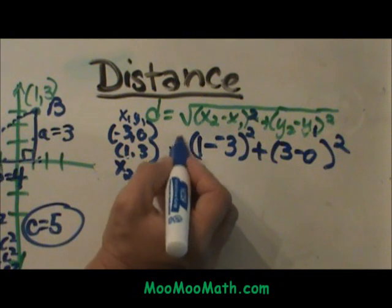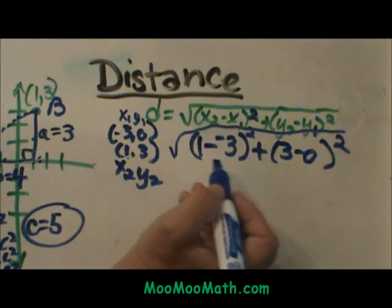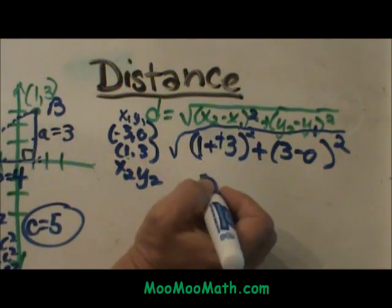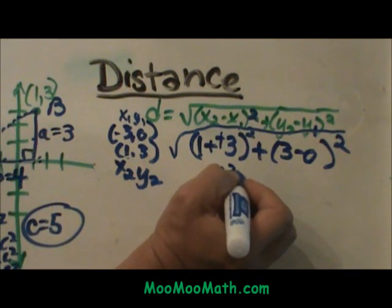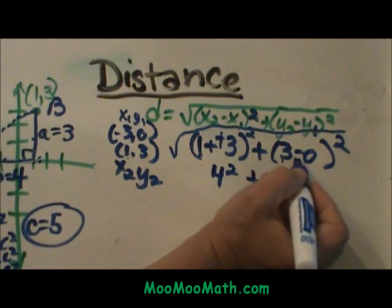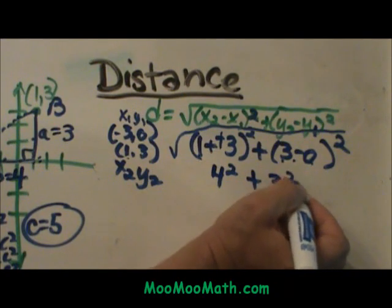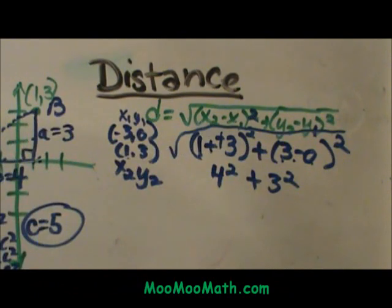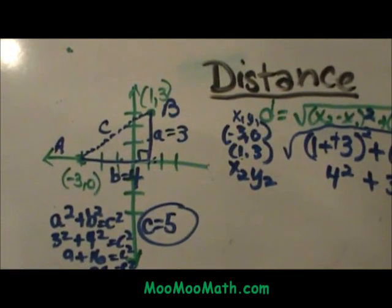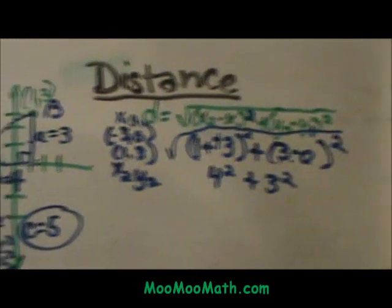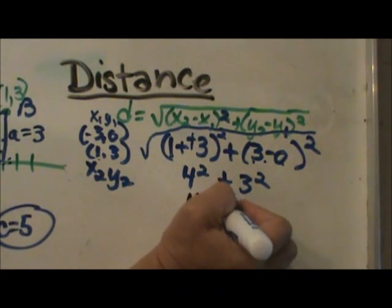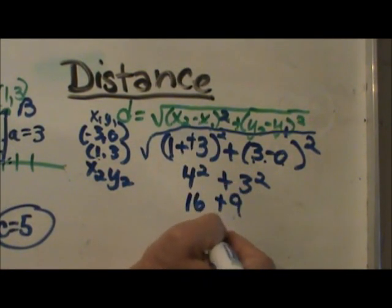And now I just simplify all this under the radical. So one minus negative three. Double negative makes a positive. So I have four squared plus three minus zero is three squared. Now I hope you recognize isn't that the length of the Pythagorean theorem we just did over here. It is. We had three and four. This is just the algebraic way to find that.